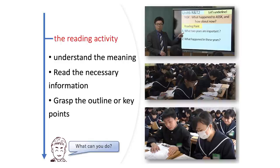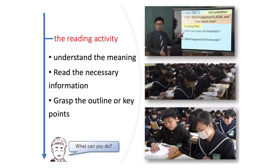In English classes in Japan, students read many kinds of paragraphs — for example, biographies of figures like Aung San Suu Kyi, explanatory texts about environmental issues, and school life in foreign countries. Through reading those passages, students learn how to understand the meaning of sentences, pick up the necessary information from text, and grasp the outline or key points of paragraphs. In the reading activities, ALTs are expected to help students acquire those reading abilities without using Japanese. It is important for students to understand English through English, not Japanese. So, what do you think you can do?